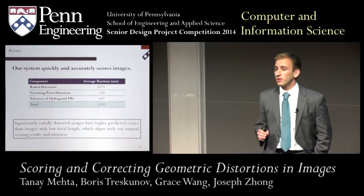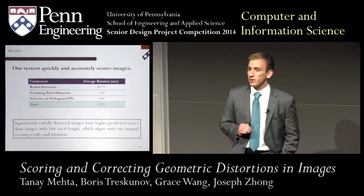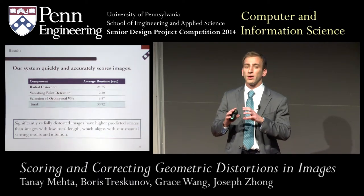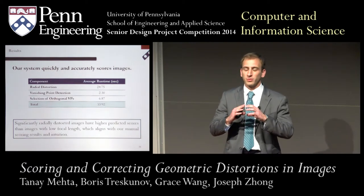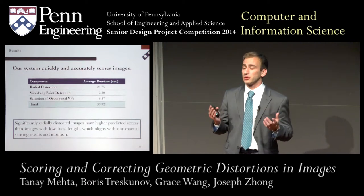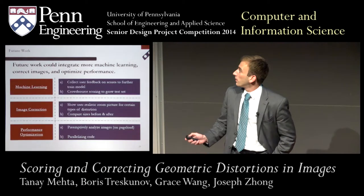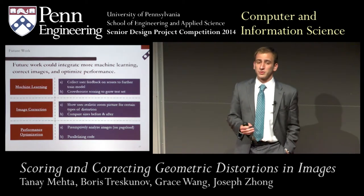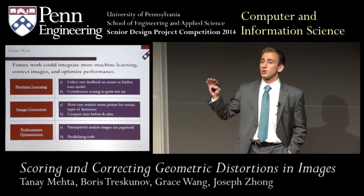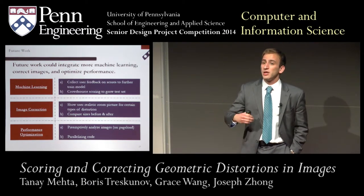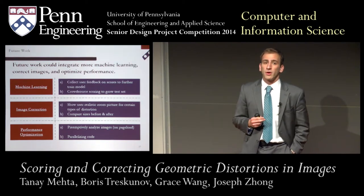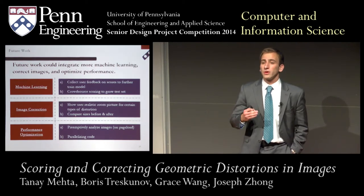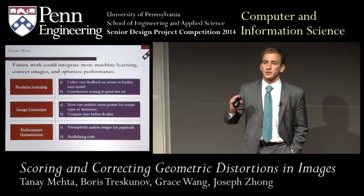Our predictive model weights radial distortion higher than focal length, which makes sense intuitively — severe radial distortion makes lines look very curved and the image appears quite different from reality. We see three main ways to improve the project moving forward: first, iteratively improving scoring by feeding scores back into the training set; second, actually correcting detected distortions rather than just scoring them; and third, optimizing the tool to reduce that 34-second runtime.